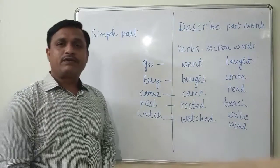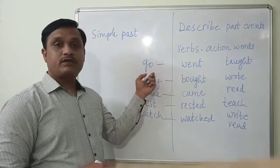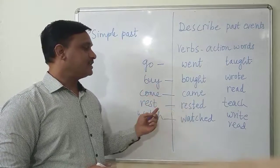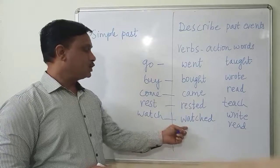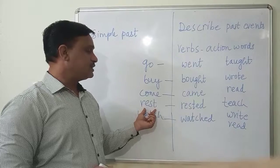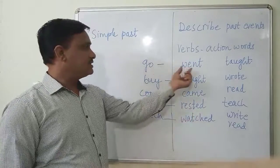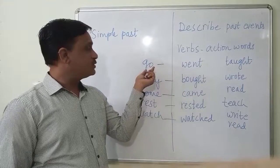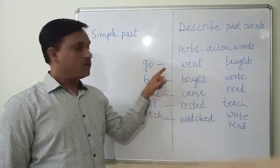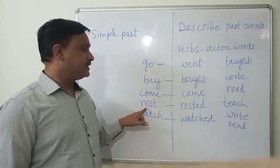So friends, you will notice some difference. Went — basic form is go. Bought — buy. Came — come. Rested — rest. Watched — watch. Here the basic form is without -ed, and the second form is with -ed. But here the second form is something different — for example, go becomes went. We haven't added -ed to go, but for rested and watched we have added -ed.